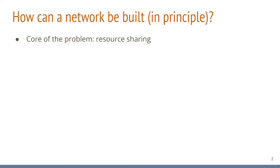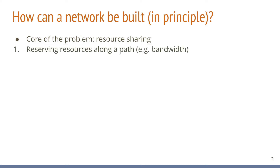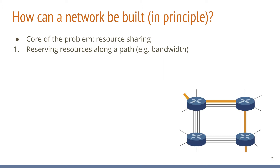The first approach to resource sharing requires reserving those resources before the actual data exchange. That requires end systems to reserve those resources along the path, and only afterwards, when all reservations have been successful, can they start to send data to each other. This principle is depicted in the figure in the lower right corner. The path in orange depicts that someone has successfully reserved one third of the bandwidth between the shown routers. By exclusively reserving a resource, a certain quality of service can be guaranteed, and the reserved bandwidth is always available to the sending end system.